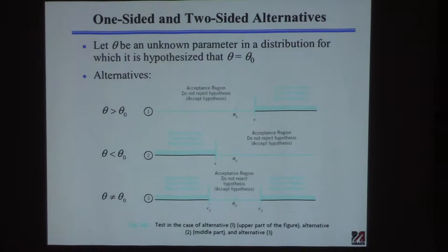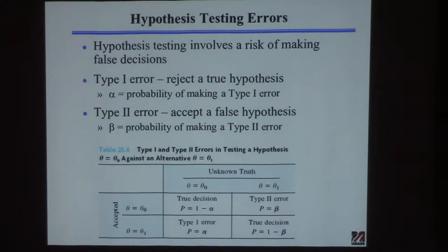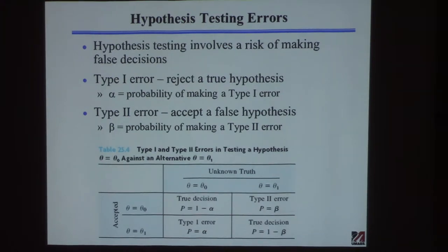So these are the alternatives. For a particular problem, you have to decide what the alternative is — left-sided, right-sided, or two-sided. They test for different things. The whole underlying idea of hypothesis testing is there's a risk of making a bad decision. If you want no risk of making a bad decision, don't make any decisions at all. But if you want to make decisions, you might make a bad one. The bad ones are measured by two errors — one of them we directly specify.